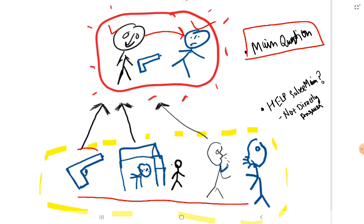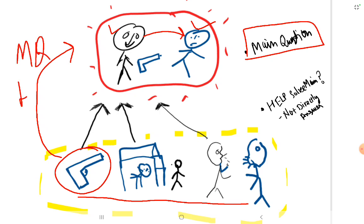The first proof is that the weapon used to kill Nilu was found in Kalu's house. This fact increases the probability that maybe Kalu has killed Nilu — the probability is high. This fact helps to solve the main question, but it doesn't directly answer it. If the gun is found in Kalu's house, it doesn't directly prove Kalu killed Nilu, because maybe the murderer threw the weapon in Kalu's house.